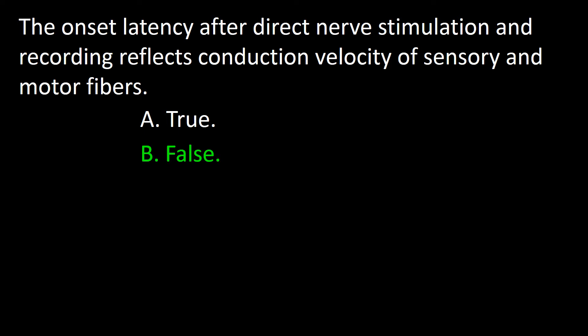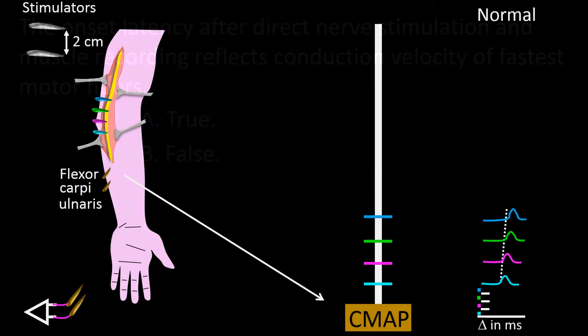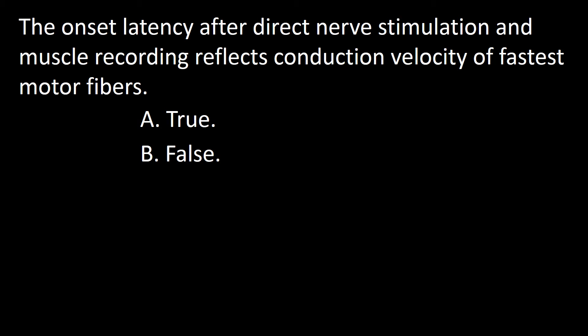Next question: the onset latency after direct nerve stimulation and muscle recording reflects conduction velocity of the fastest motor fiber. Most neurophysiologists use peak latency to calculate sensory nerve conduction velocity, while all neurophysiologists use onset latency to determine motor nerve conduction velocity. Onset latency reflects the arrival and motor plate activation by the fastest motor fibers. So the answer to this question is A.